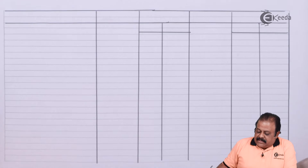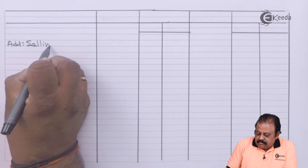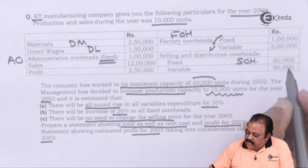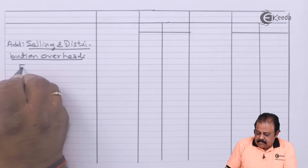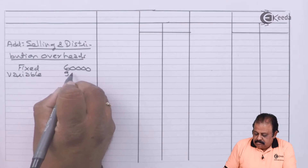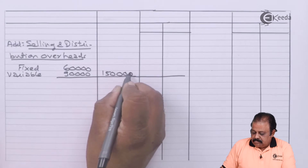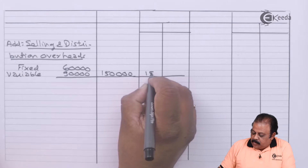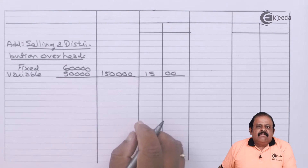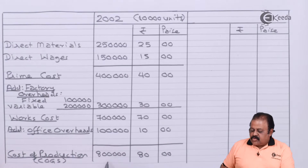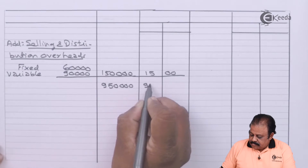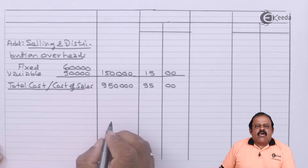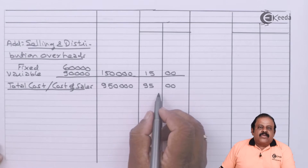To cost of goods sold we add selling and distribution overheads: fixed ₹60,000 and variable ₹90,000. Total selling overheads are ₹1,50,000. Divided by 10,000 units, per unit selling overhead is ₹15. Adding to cost of production ₹8,00,000, total cost or cost of sales is ₹9,50,000, and per unit total cost is ₹95.